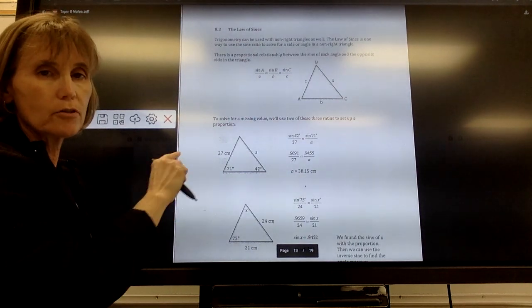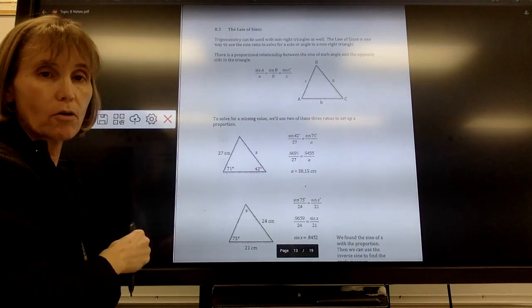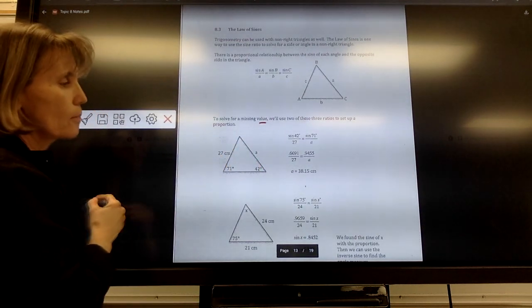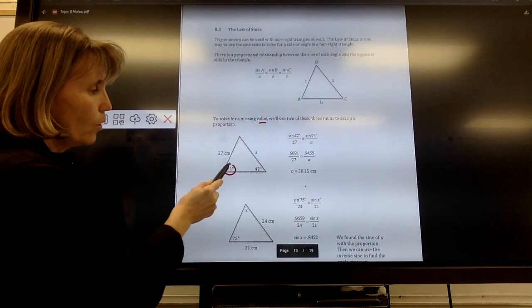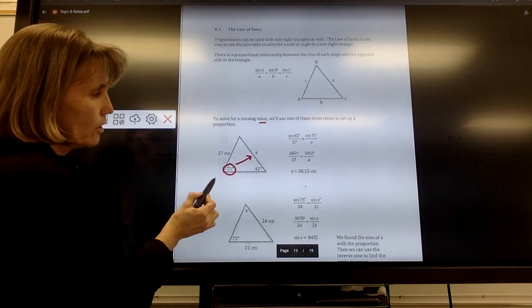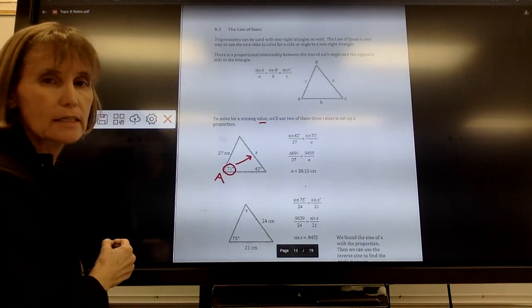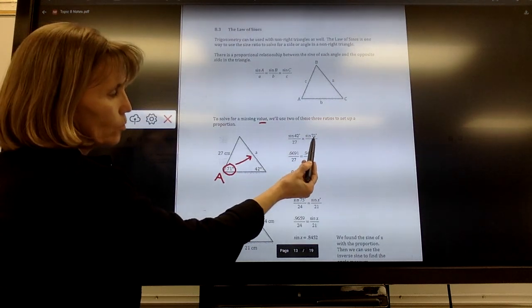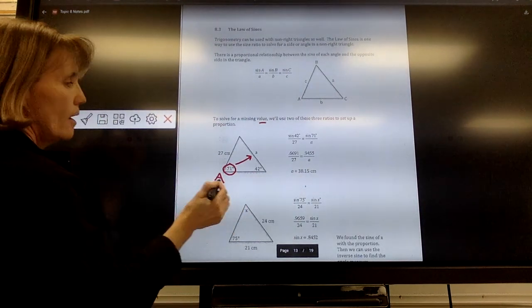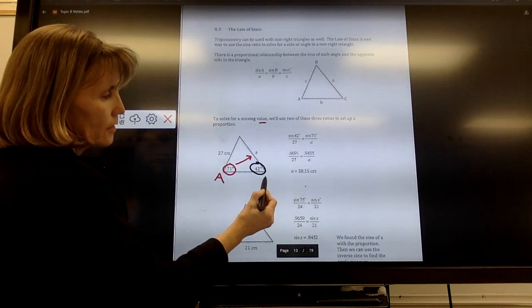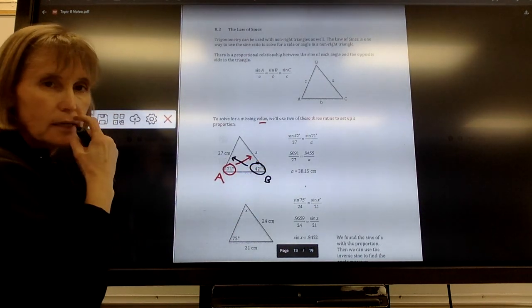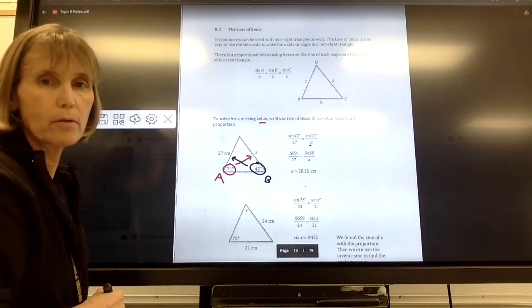Now you're going to be given two out of those three ratios. You got to have two, but you can then solve for a missing side or a missing angle measurement. To solve for missing value, we'll use two of the three ratios to set up a proportion. So you'll notice that in this triangle you're given one angle measure, and just like we've always done with triangles, we want to look at the side that is opposite of this. So we're going to call this angle A. That means the side opposite of the angle is side A. So we've set up the sine of 71 degrees over its side length. So when you set this up, you should only have one variable in your proportion.